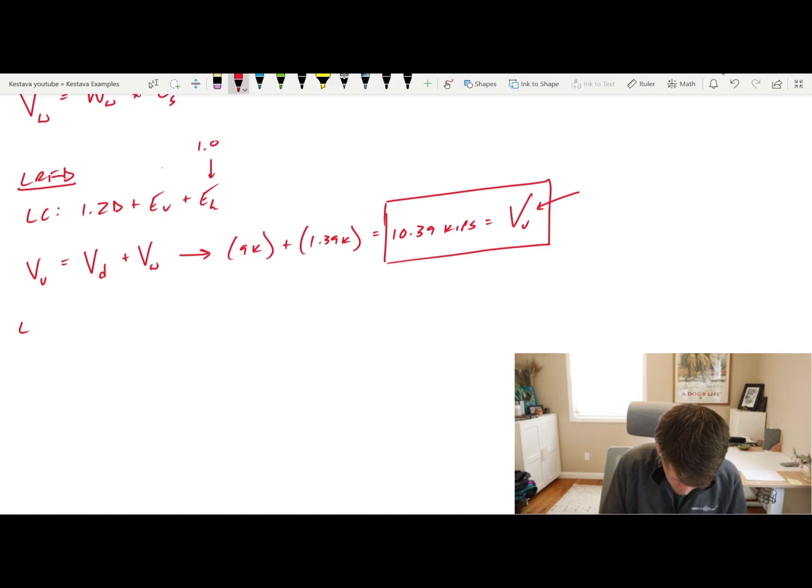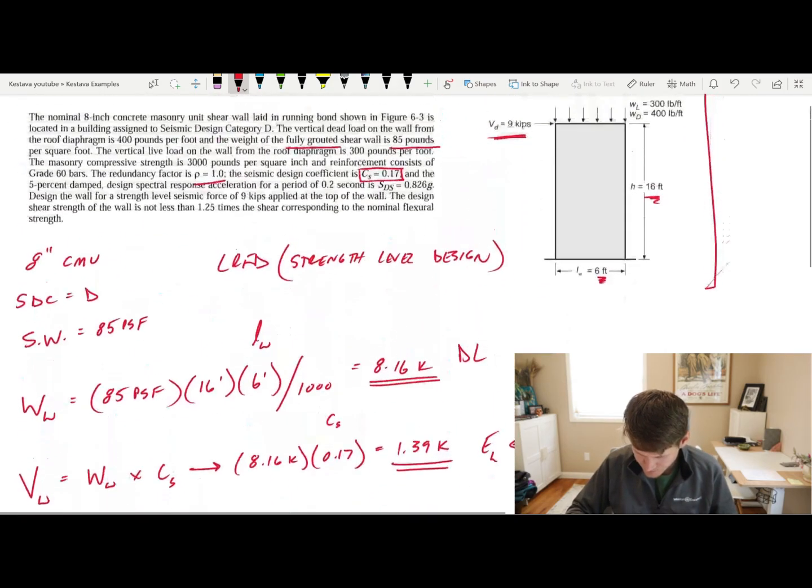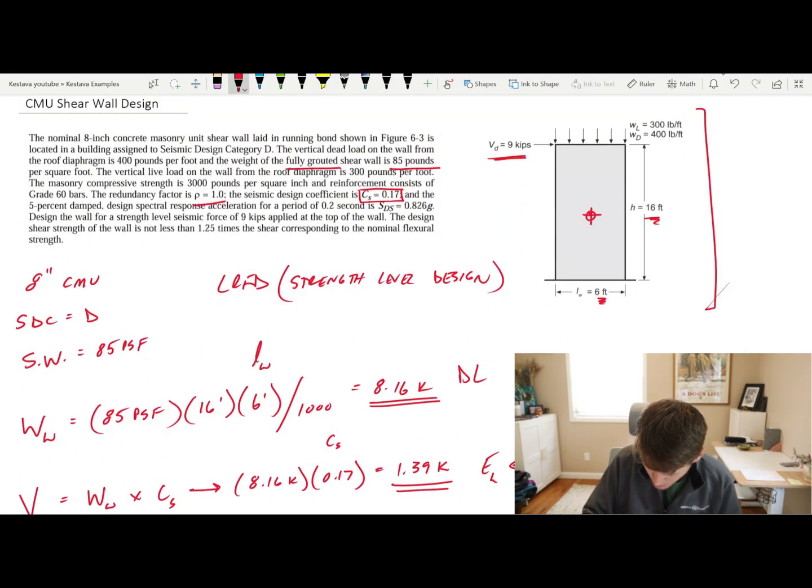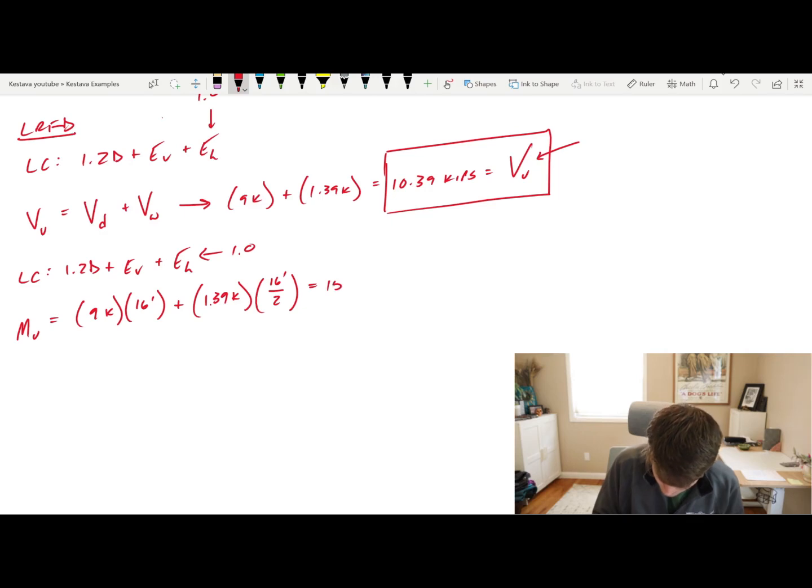Next, let's find our maximum moment. That's going to be a load case of the same. So again, no load factors needed for our lateral demand. It's all 1.0. So we can say MU is equal to 9 kips, that's from our story shear, times full height of the wall, which is 16 feet, plus the demand from our wall, 1.39 kips, with half the story height, so the centroid of the wall itself. So 16 feet over 2. Basically, we're saying that the centroid of the mass of the wall is at mid-height of the wall. So that VW is being applied right there, while VD is being applied up top. So your moment arm is effectively one half of H, and H being 16. That all spits out 155 kip feet. That's strength level moment.